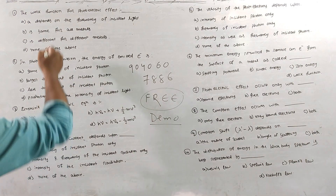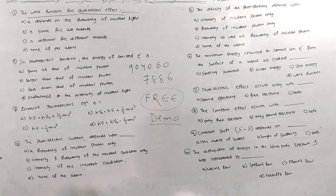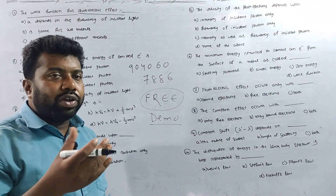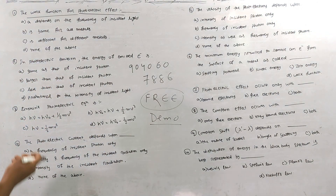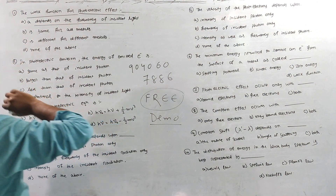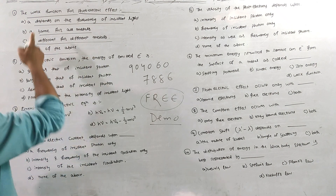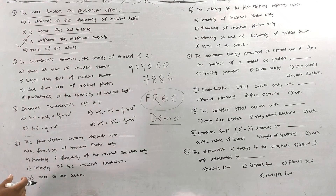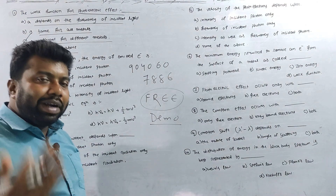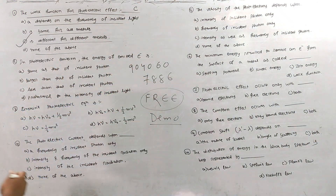The first question: the work function for a photoelectric effect. This is a theoretical question — a definition question. What should the work function of the photoelectric effect depend on? It depends on the frequency of the incident light, same for all material, different for all material, or none of these. The work function is different for different metals. The answer is C.